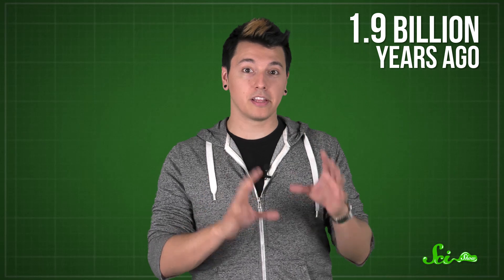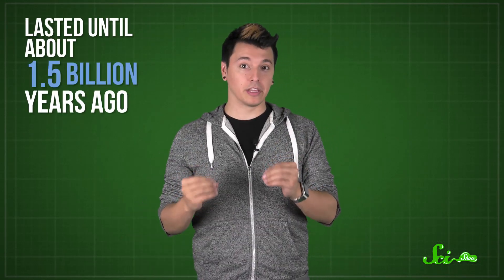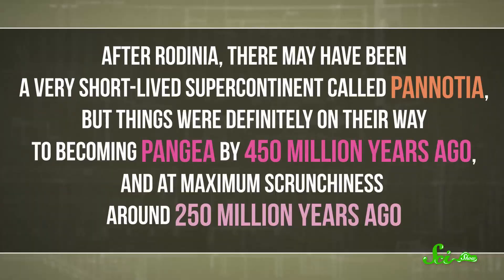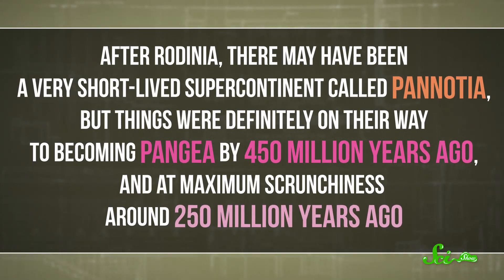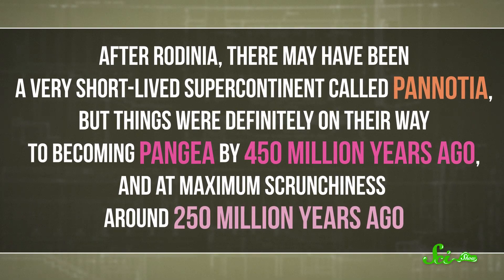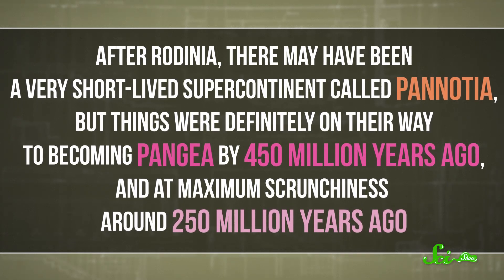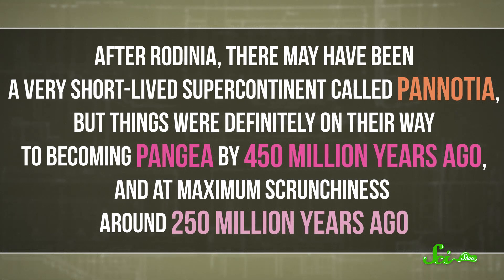All these continents are thought to have joined up about 1.9 billion years ago to form the first supercontinent that can be identified with some degree of confidence, called Columbia. Columbia lasted until about 1.5 billion years ago, when it broke up. The pieces then rebounded and joined up to form the supercontinent of Rodinia about 1.1 billion years ago. After Rodinia, there may have been a very short-lived supercontinent called Pannotia, but things were definitely on their way to becoming Pangaea by 450 million years ago, and at maximum scrunchiness around 250 million years ago.